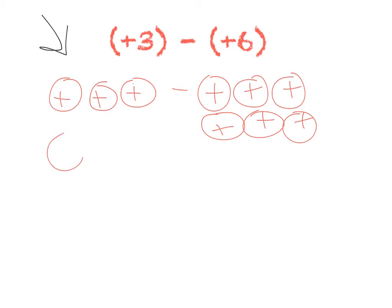I can add one, two, three more positive counters. So now I have enough counters. Now I have six counters take away six. But to ensure that these three counters don't throw off my number I'm also going to add one, two, three more negative counters.